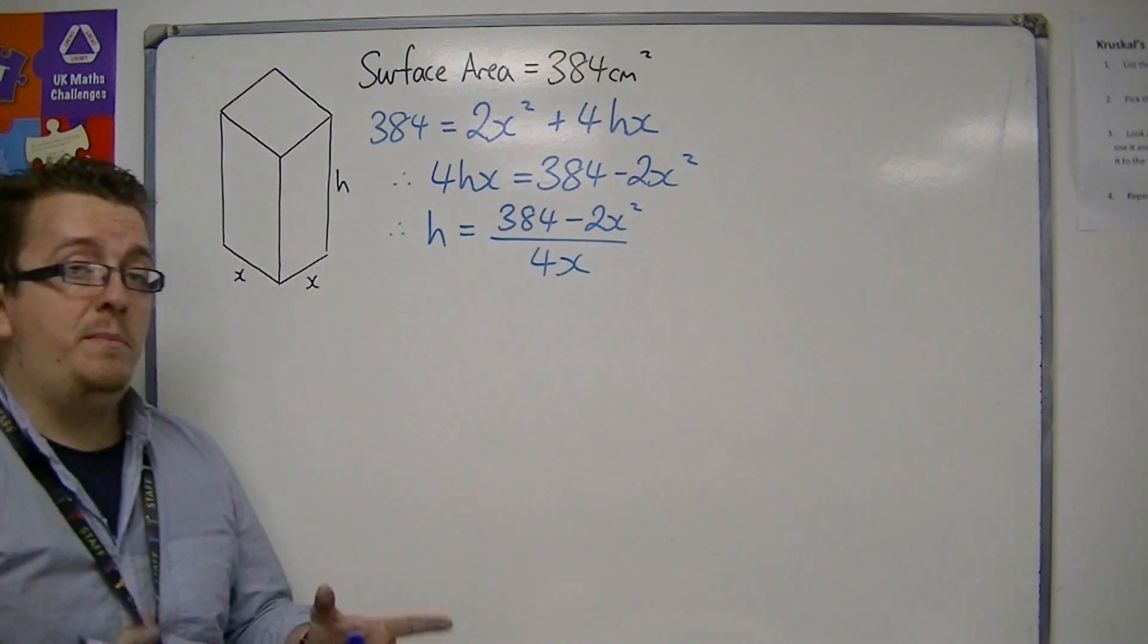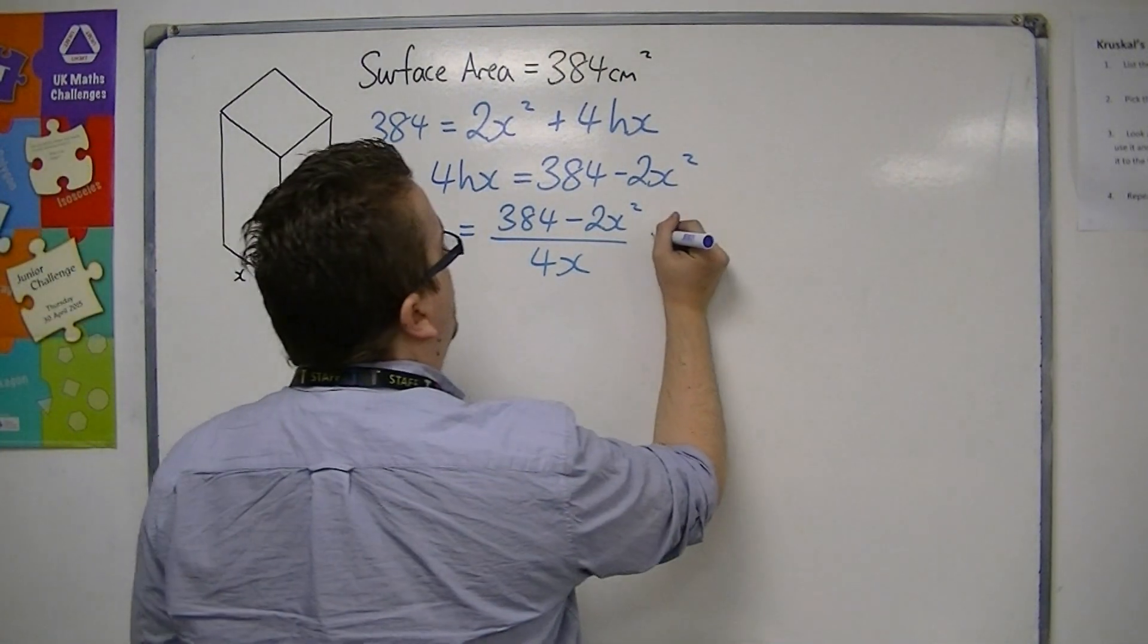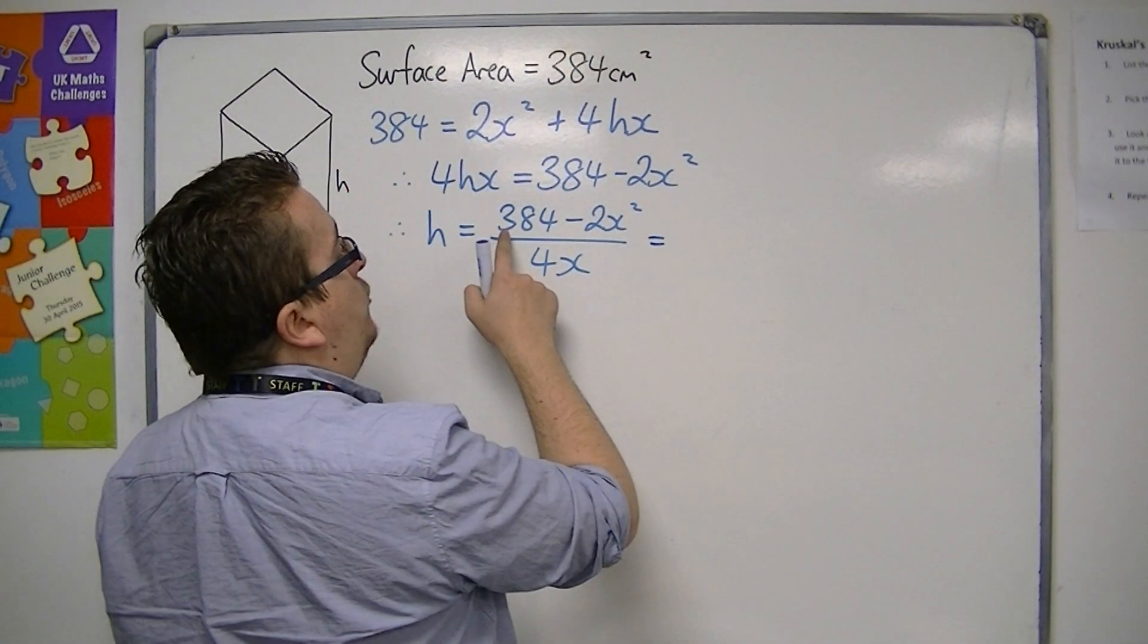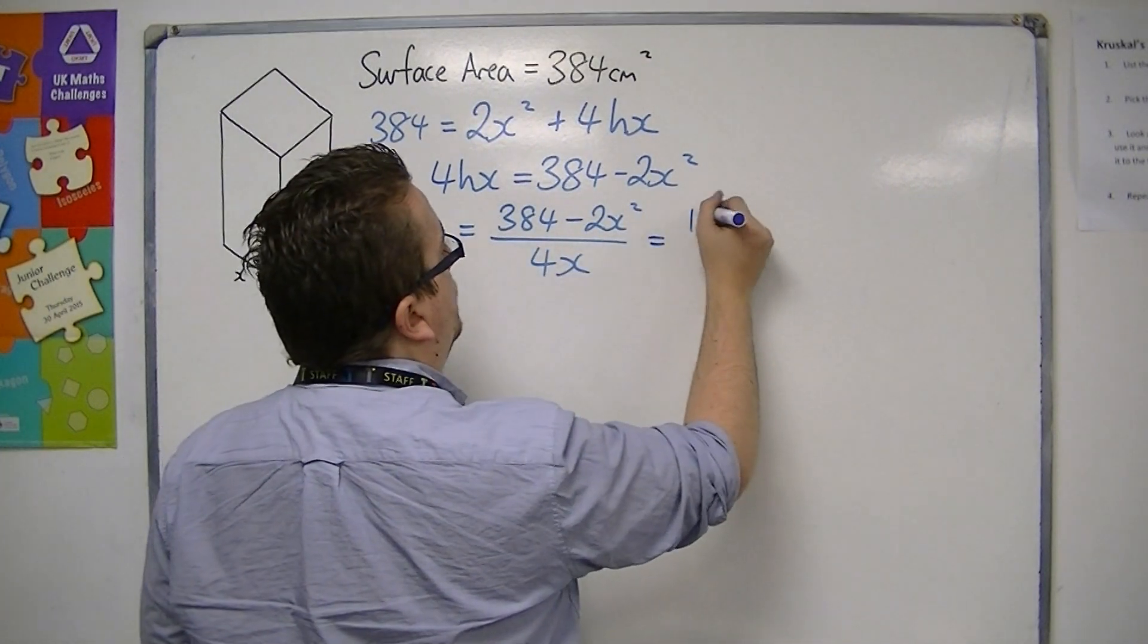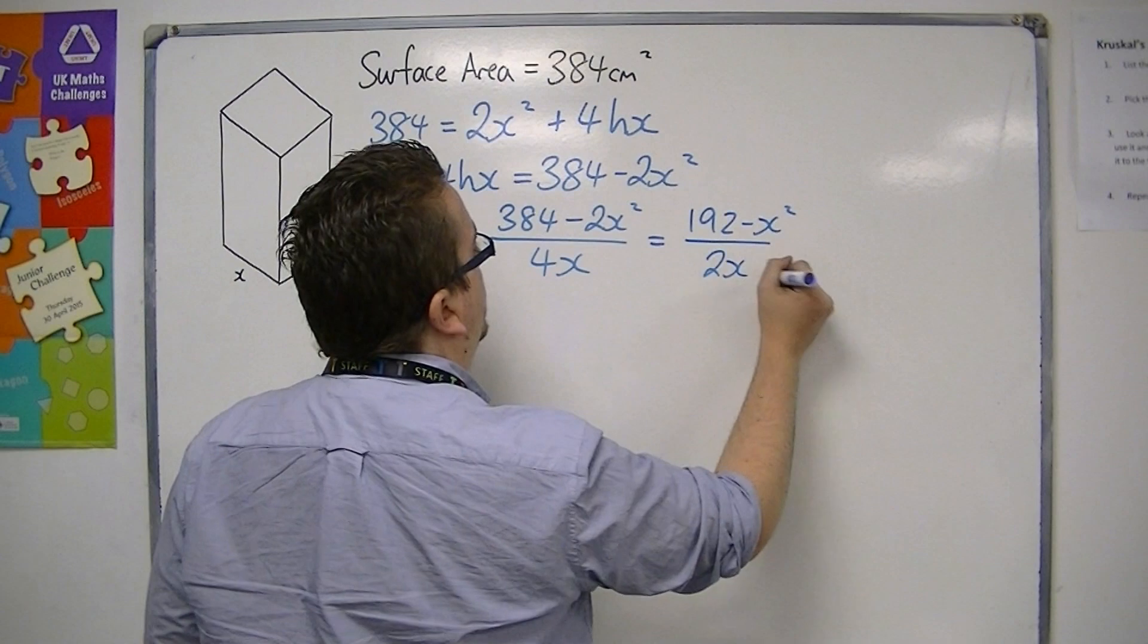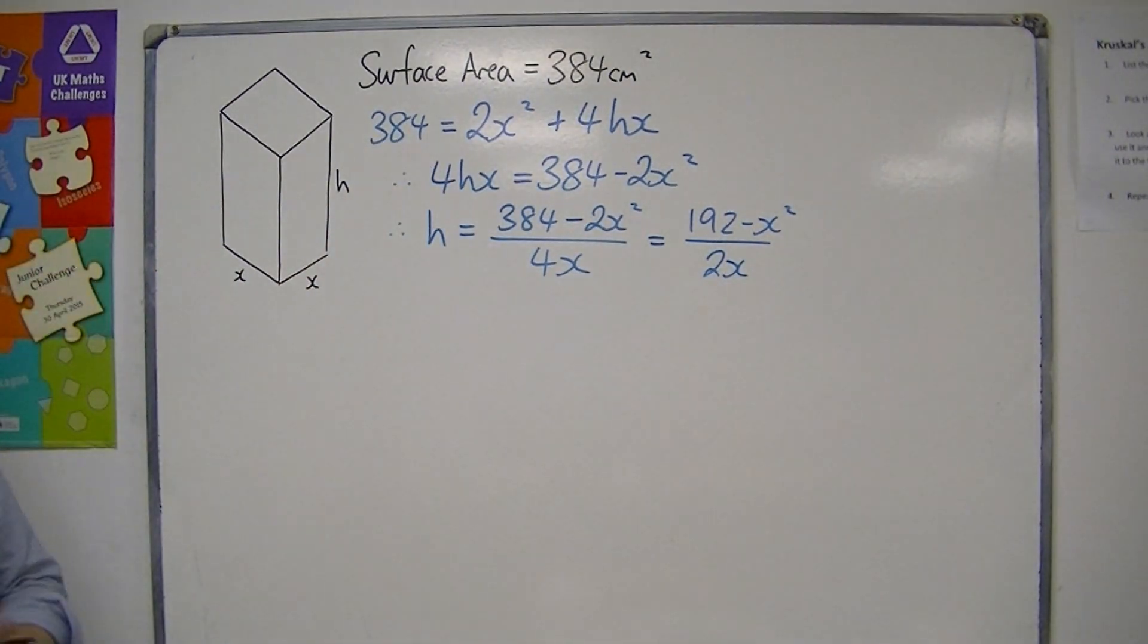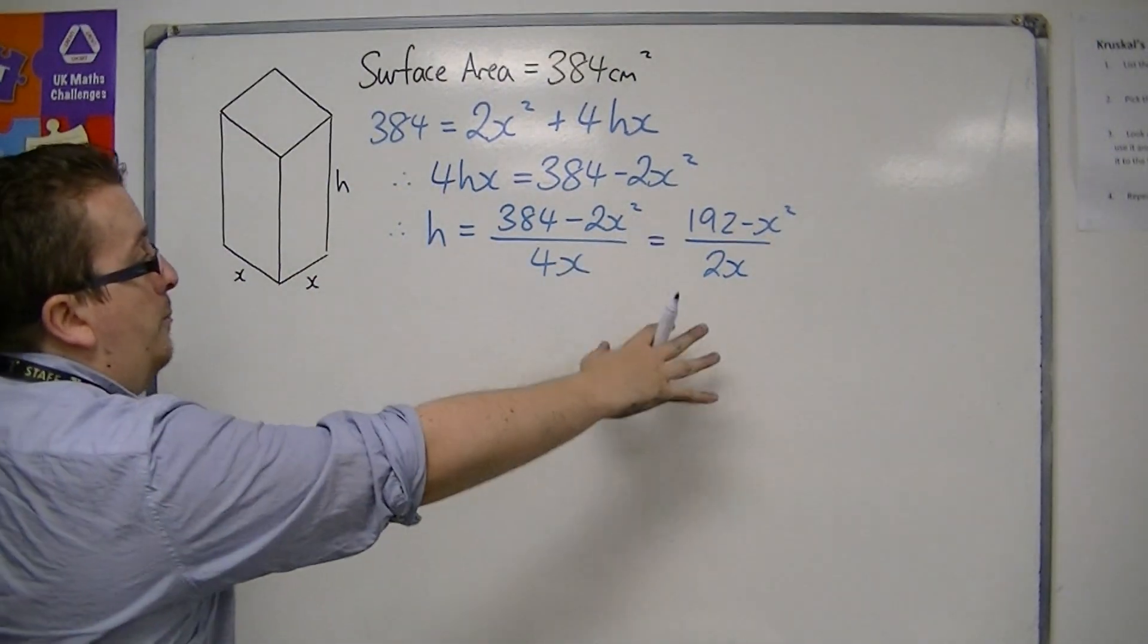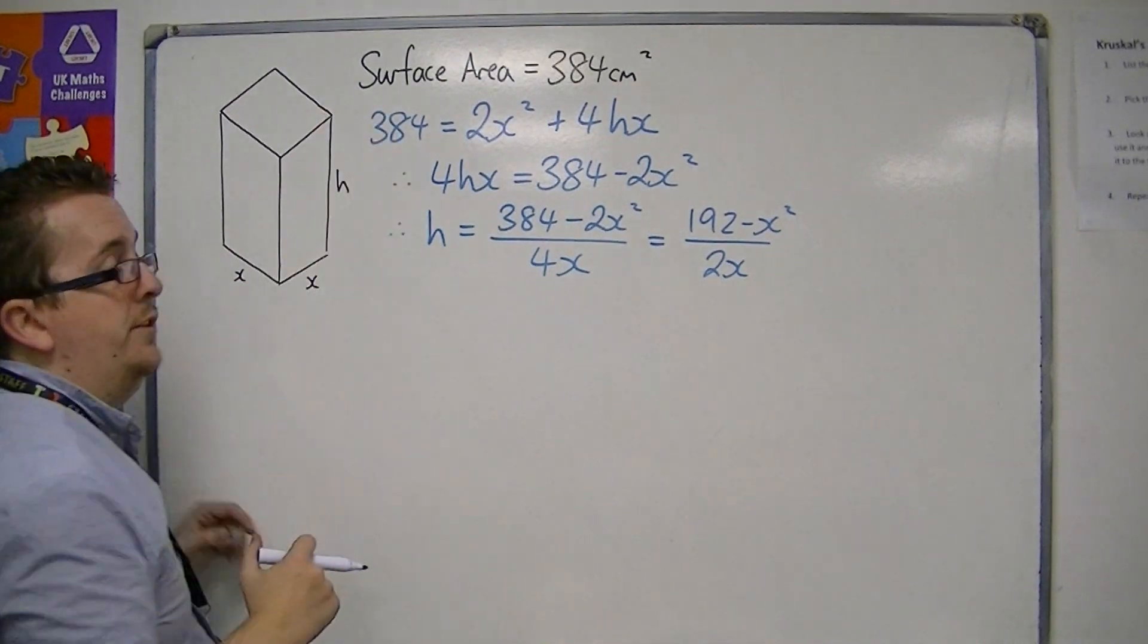Now this can be simplified, so I can divide everything by 2, and that's 192 take away x squared over 2x. And that is an expression for h, the height of the box.